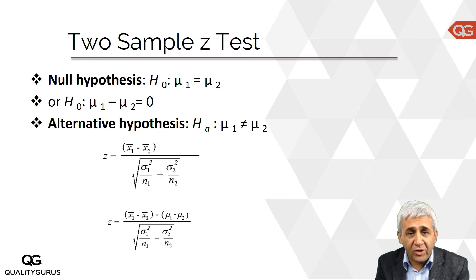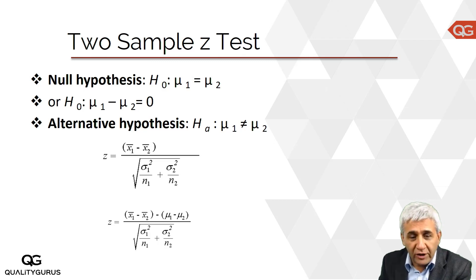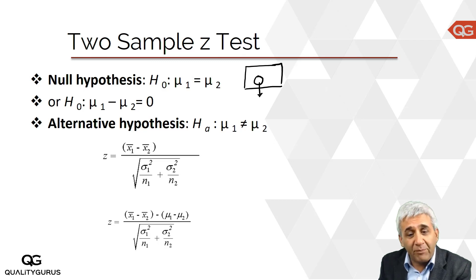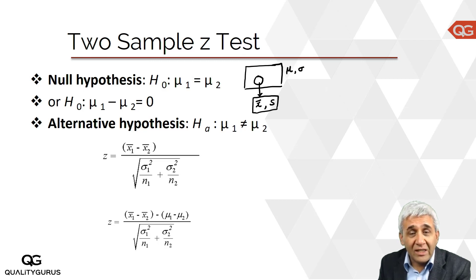Our next test is two-sample Z test. What is the difference between one-sample Z test and two-sample Z test? In one-sample Z test, you have a population and from that population you draw one sample. This sample has a mean of X-bar and standard deviation of S, and your population has a mean of mu and standard deviation of sigma. Based on X-bar and S, we want to judge about the population — whether the population mean has changed or not.